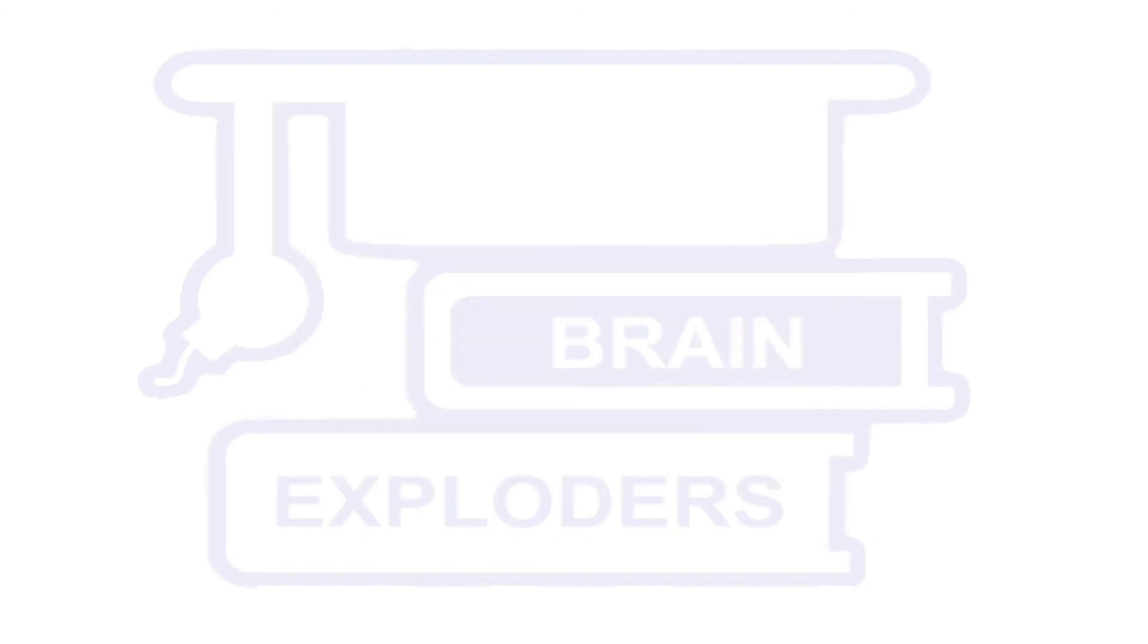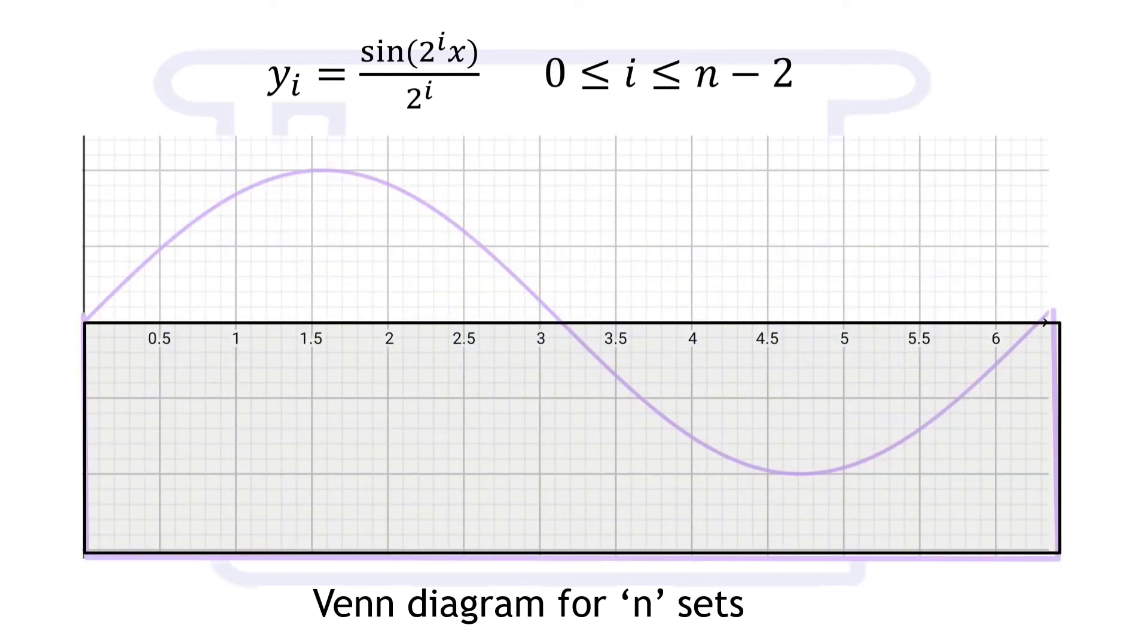Here is one more interesting way of drawing Venn diagrams. You can use this equation: yi equals sin(2^i x) over 2^i. Assume that the region below the x-axis represents the first set, the region below this lavender shade curve represents the second set, and so on for other colors and sets.